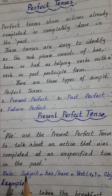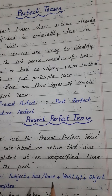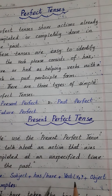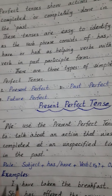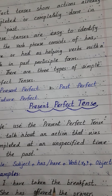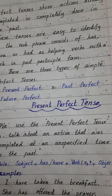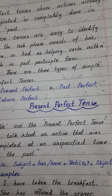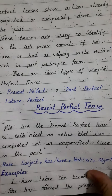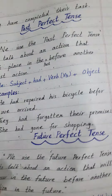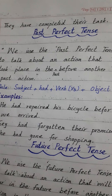The rule of its making is: subject + helping verb has or have + third form of verb + object. Let's see some examples. I have taken the breakfast — main nashta kar chuka hun. She has offered the prayers — wo namaz ada kar chuki hai. They have completed their task — wo apna kaam mukammal kar chuke hain.